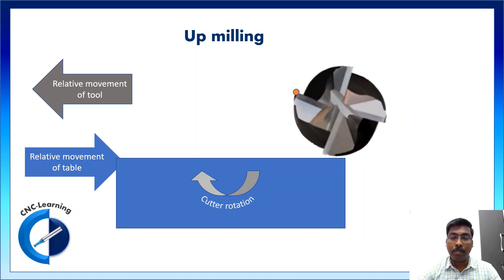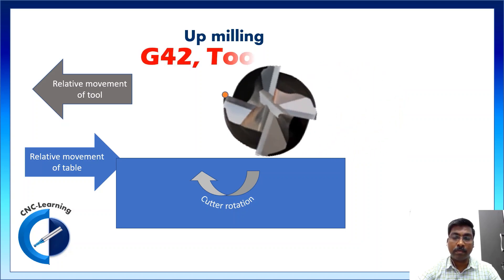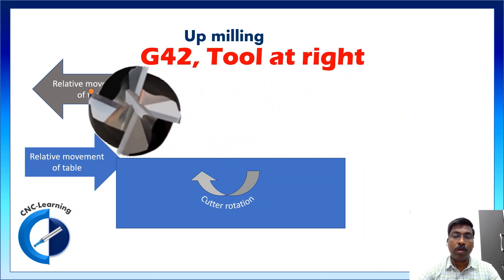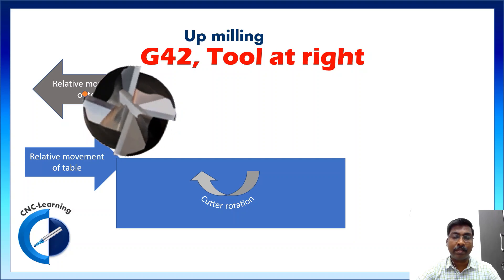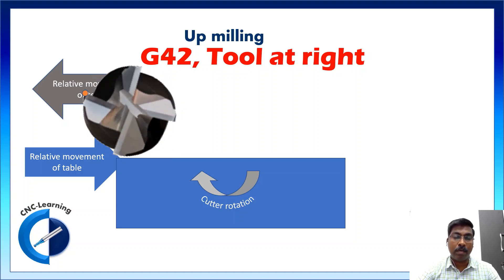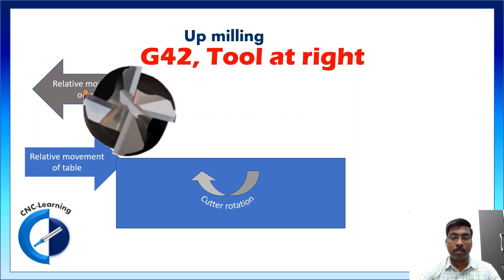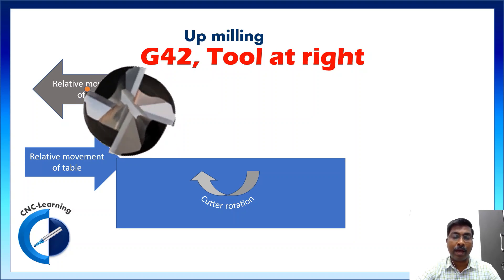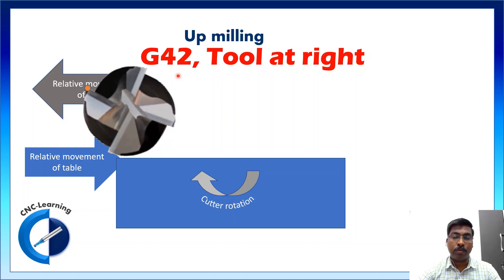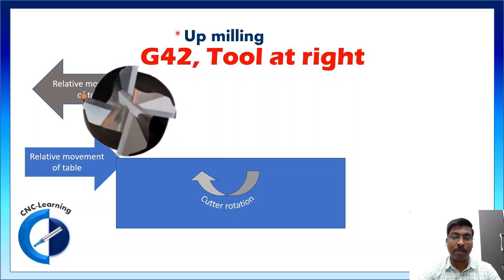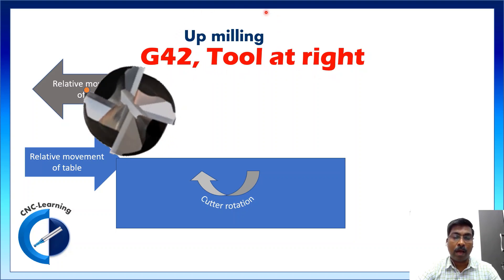In up milling, the tool is at right. Again, in most cases we are talking about clockwise tool rotation, and G42 — tool at right — is applicable for up milling.